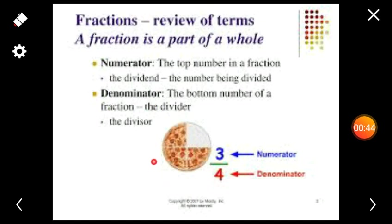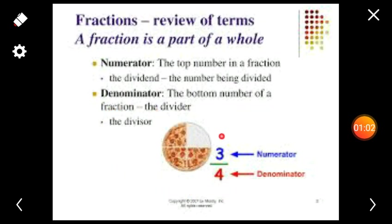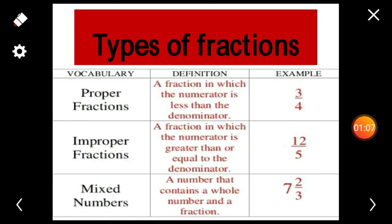Look at this figure. Here, the shaded region is 3 by 4. The fraction that represents the shaded region is 3 by 4. The top number in a fraction is called the numerator. The bottom number of a fraction is called the denominator. In the fraction 3 by 4, 3 is called the numerator and 4 is called the denominator.